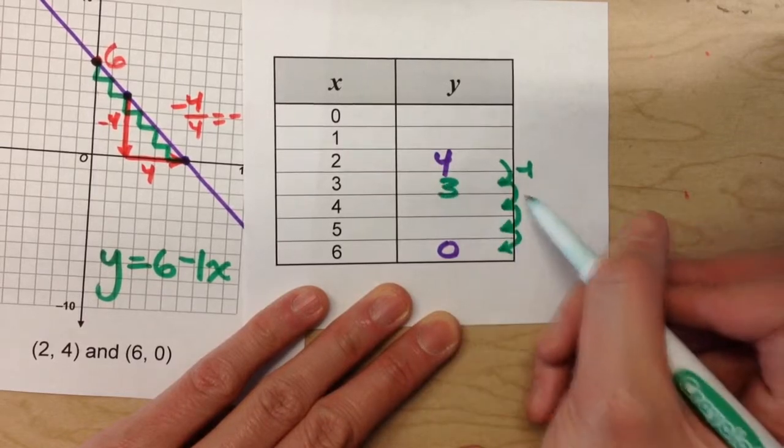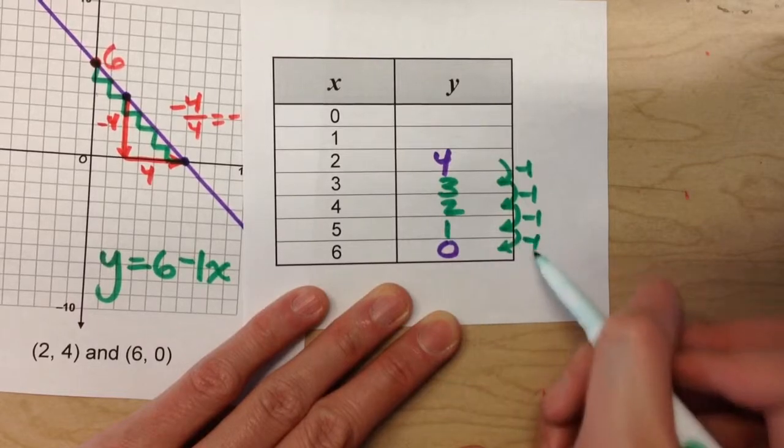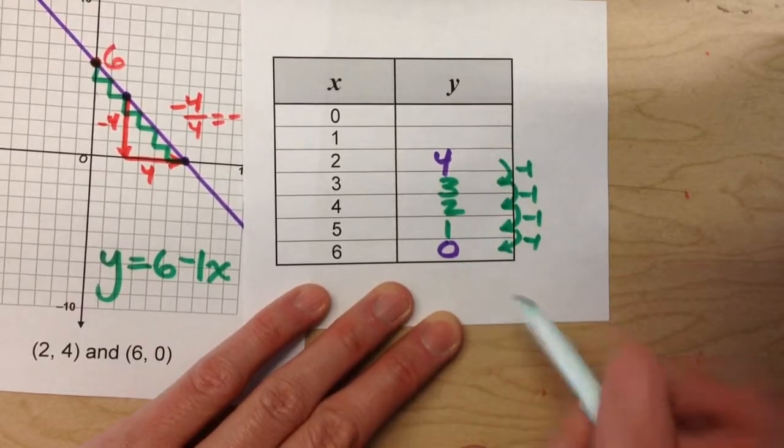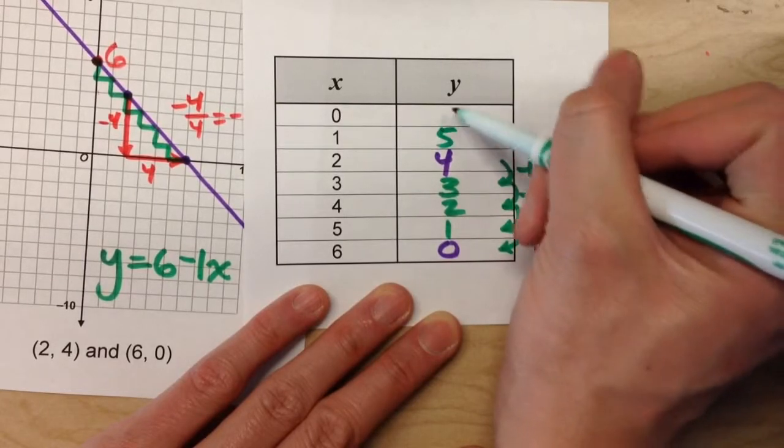4 minus 1 is 3, 3 minus 1 is 2, 2 minus 1 is 1, 1 minus 1 is 0. Perfect, it works out great. And then we can fill in the rest of the table that way too. It's going to go up 1 each time.